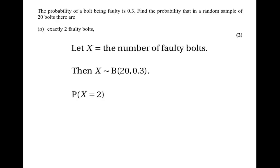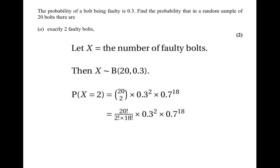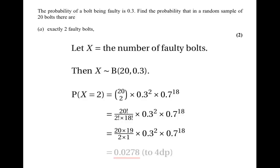The question asks for the probability that there are exactly 2 faulty bolts, that is P(X=2). From the formula, that equals 20 choose 2 times 0.3 squared times 0.7 to the power of 18. Now 20 choose 2 equals 20 factorial divided by 2 factorial times 18 factorial, which simplifies to 20 times 19 over 2 times 1, giving a probability of 0.0278 to 4 decimal places.